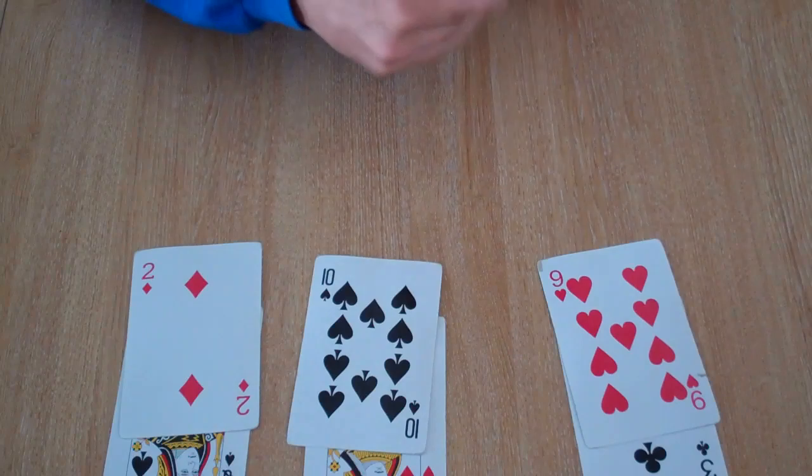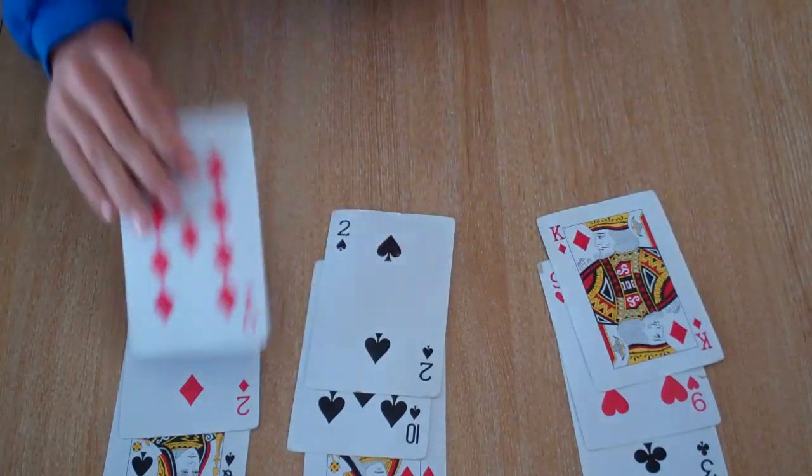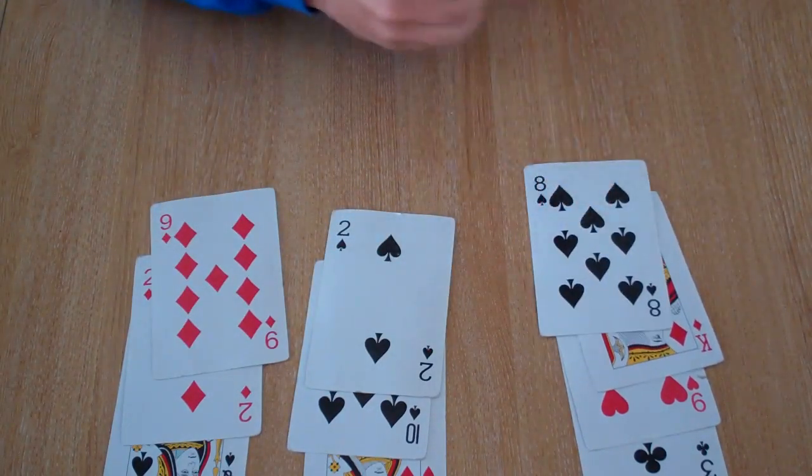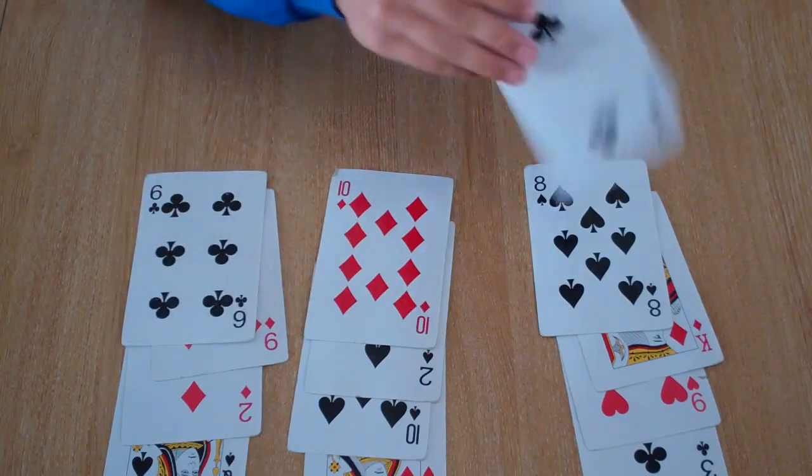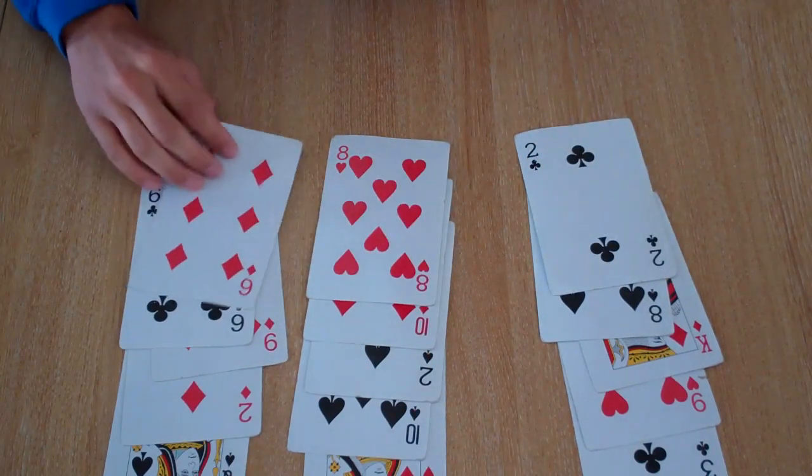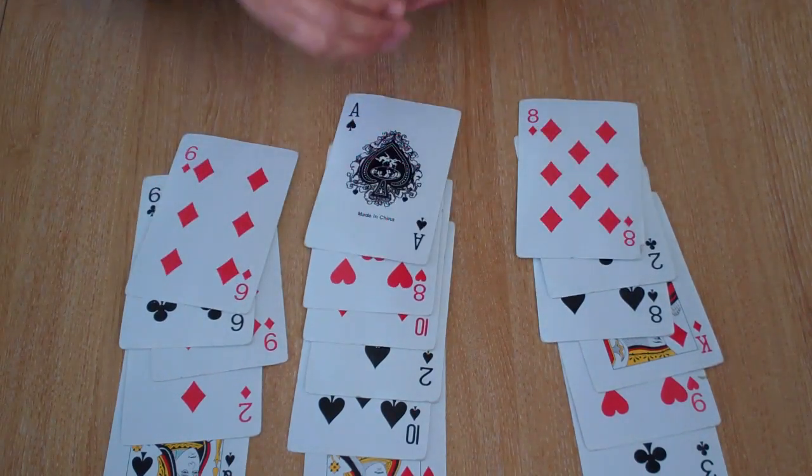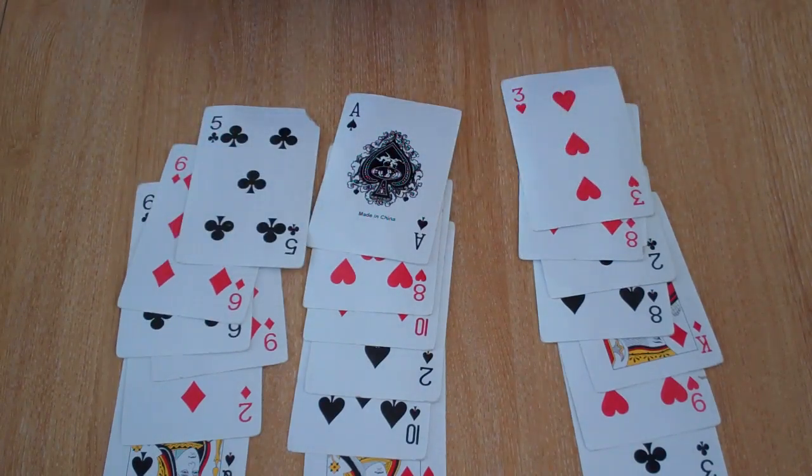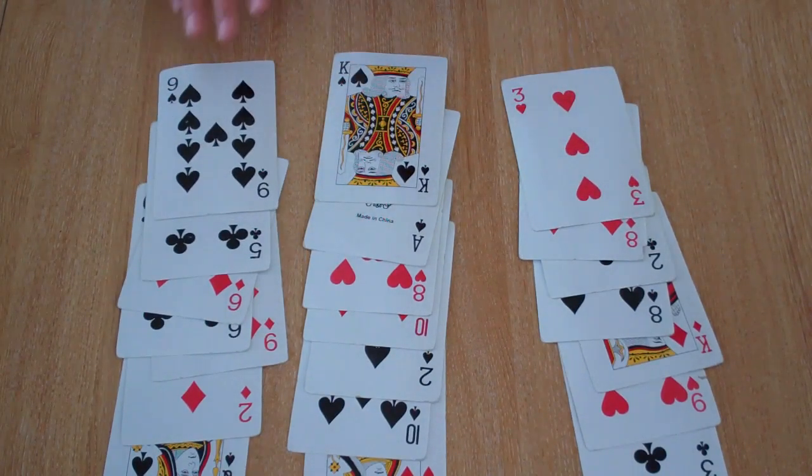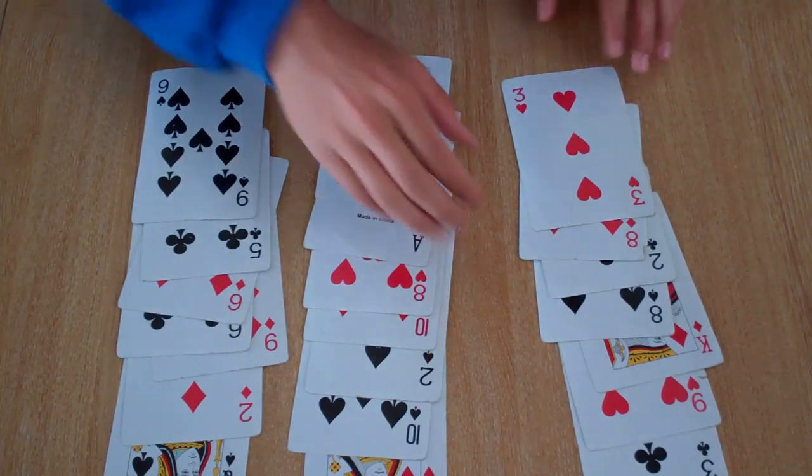Same as before. Three columns, seven cards each. And again, I need to know which column is it in. Middle column.